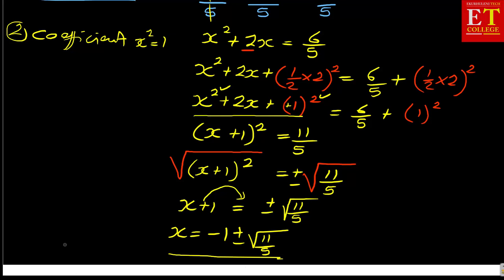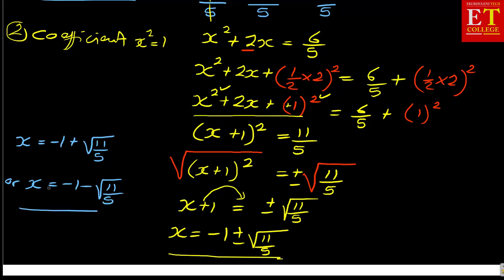So these are the two values of x: x equals minus 1 plus square root of 11 over 5, or x equals minus 1 minus square root of 11 over 5.